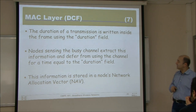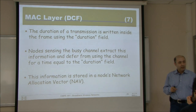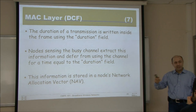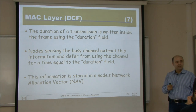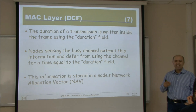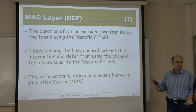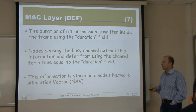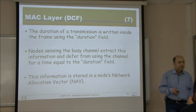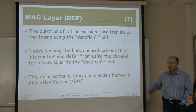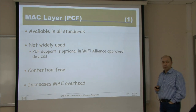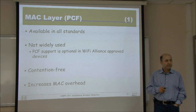The duration of a transmission is written inside the frame header using the duration field. Therefore, everyone listening to the network knows how long that transmission will take, and they can avoid sensing the channel during that time. This is done using the network allocation vector (NAV), where you mark the channel as busy because you know it will be. We will stop here and continue with the point coordination function next time.